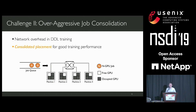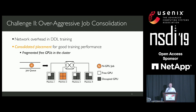In this example, a four-GPU job cannot be placed until there is a machine with four free GPUs available. Although consolidated placement is proposed for good training performance, it can lead to fragmented GPUs being underutilized on each machine inside the cluster. Jobs may also suffer longer queuing delay with this placement scheme.